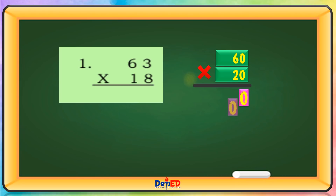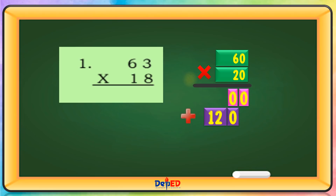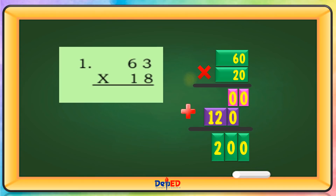Zero times zero equals zero. Zero times six equals zero. Two times zero equals zero. And two times six equals twelve. Let's add this. Let's bring down the zero. Zero plus zero equals zero. And let's bring down the twelve. The product of 60 times 20 is 1,200.